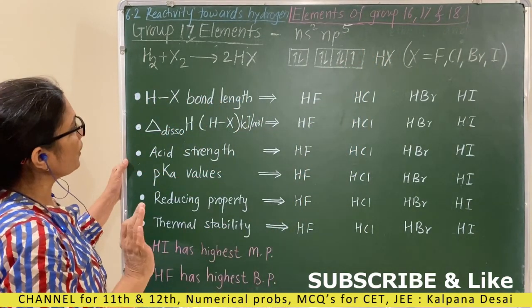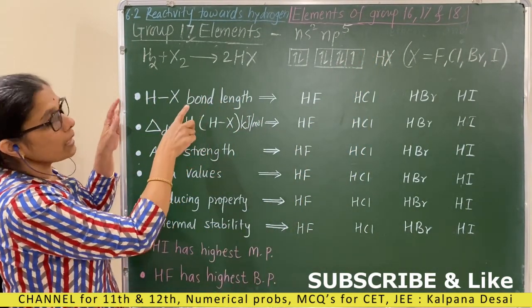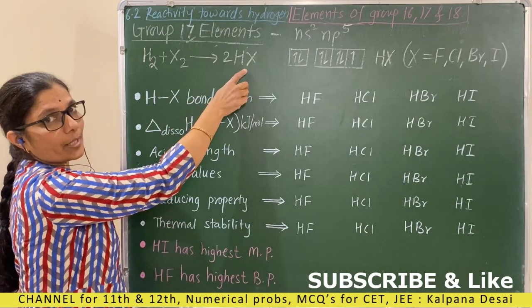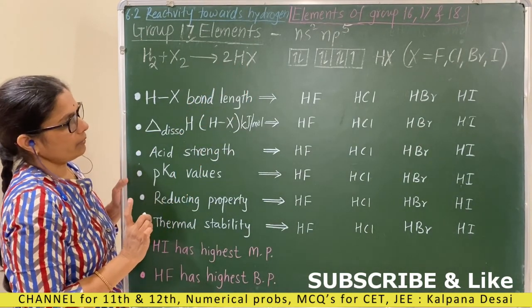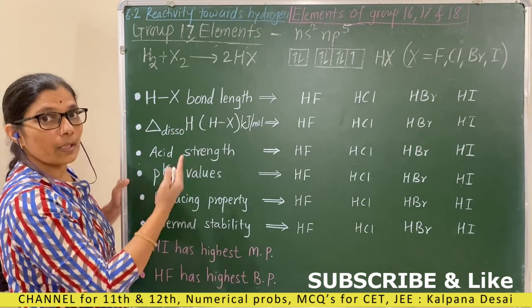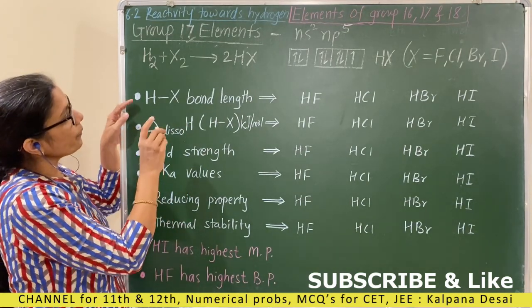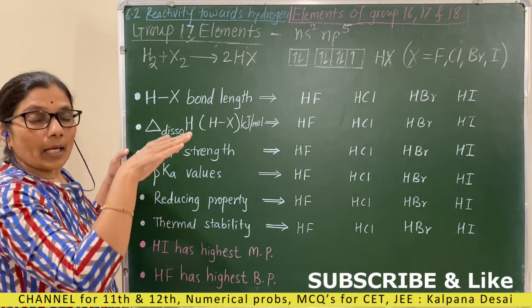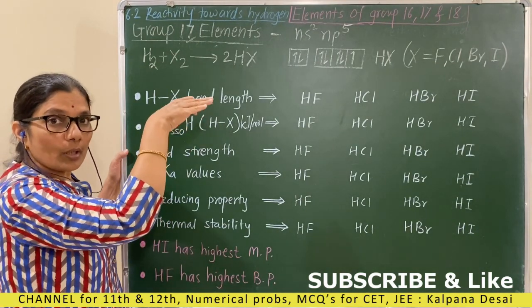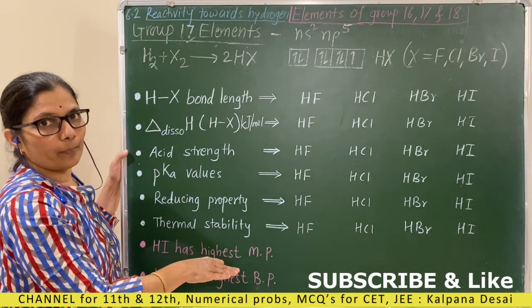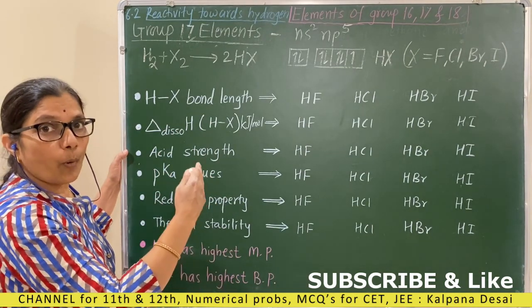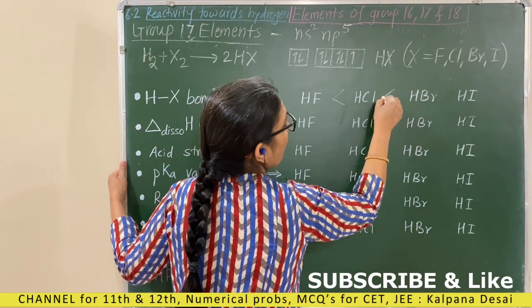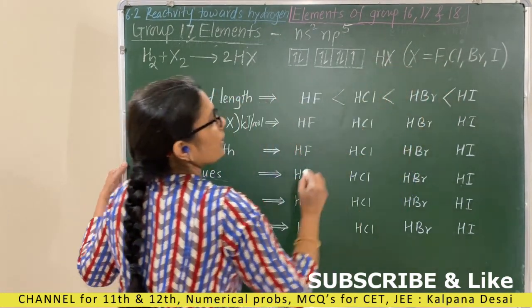The halogens X include fluorine, chlorine, bromine, and iodine. Now let us see the chemical properties of HX (hydrogen halides). Regarding H–X bond length: atomic size goes on increasing down the group, therefore bond length increases down the group.